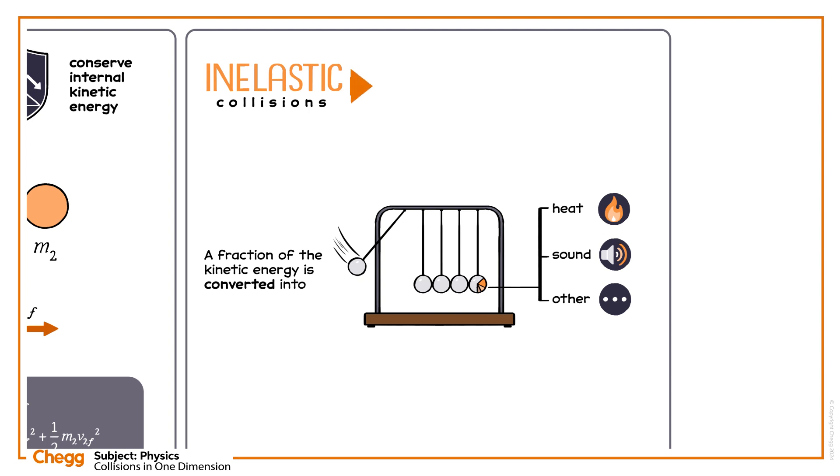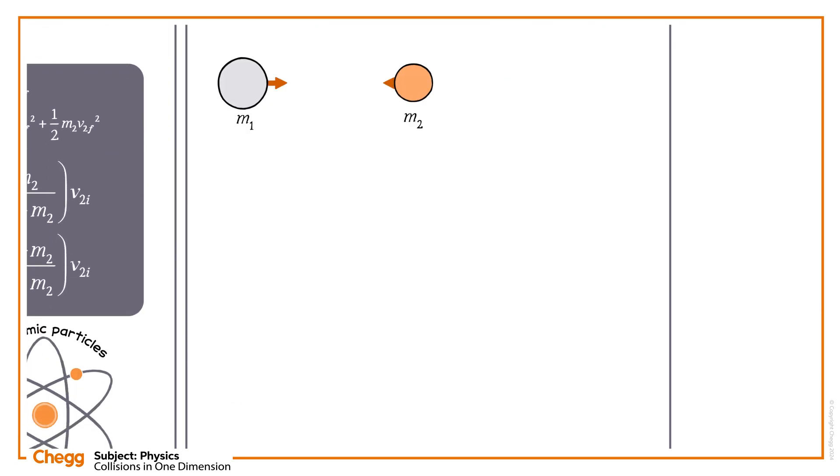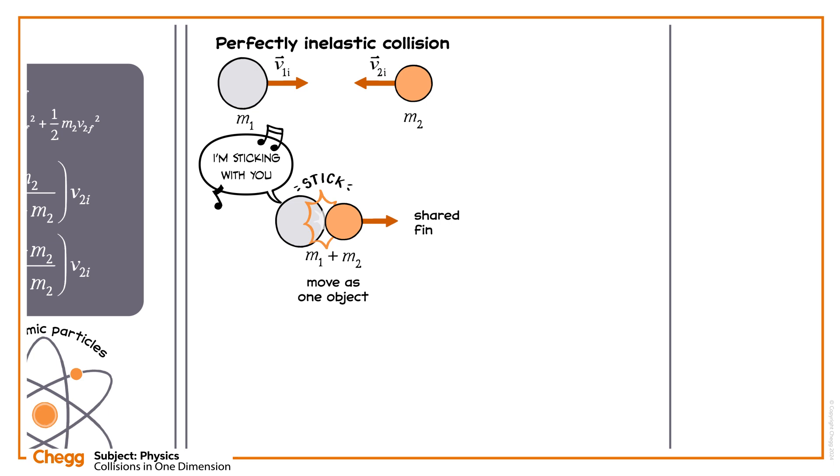In inelastic collisions, the system's total momentum is conserved, but the total kinetic energy of the system is not. Particles can stick together after a collision. We call that a perfectly inelastic collision, in which case they move as one object with a shared final velocity. Or particles can come to a standstill, in which case some of the kinetic energy is transformed in other forms of energy, like heat.